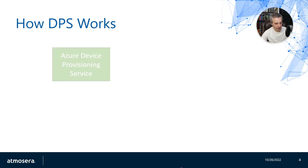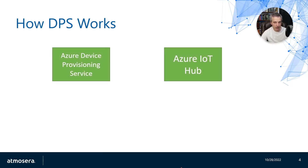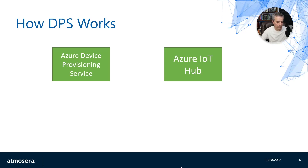DPS starts with a Device Provisioning Service and you need an IoT hub associated with that. The association between these two has to be brokered before we can actually even assign credentials to a device. I need to create some kind of registration on the Device Provisioning Service, associate one or more IoT hubs with it, and then as part of that process I can create the credentials that are needed to put on devices.